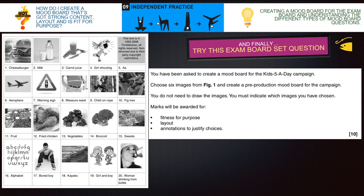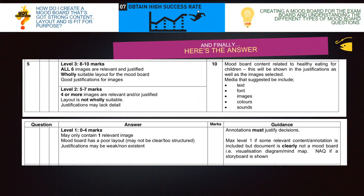Now we'll go through the answers. Remember the first thing we need to look at is the content box: mood board content related to healthy eating for children. This will be shown in the justifications as well as the images selected. Media suggested to be included: text, font, images, colours, and sounds. Annotations must justify the decisions. Remember from the modelling task — a lot of people used a grid layout which would tie into being a storyboard, so avoid that.